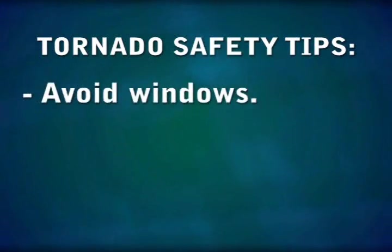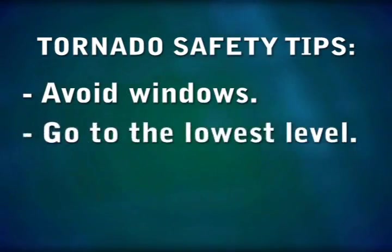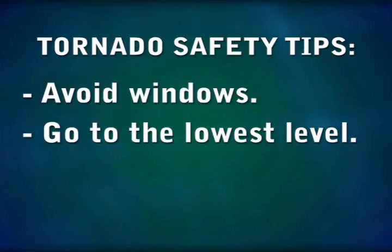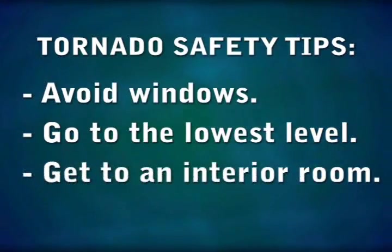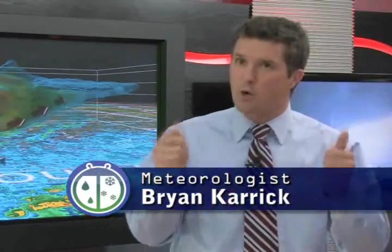During a tornado warning, the first thing you want to do is find a safe place that does not include windows. Move to the lowest level of whatever building you're in. If your house has a basement, move there as quickly as possible and avoid windows. Put as many walls between you and the outside storm as you can. If your house doesn't have a basement, find an interior room on the first floor — a closet or a bathroom works. If you have a bathtub, climb into it and pull something over you to protect yourself from potential falling debris.